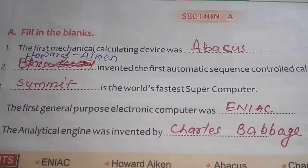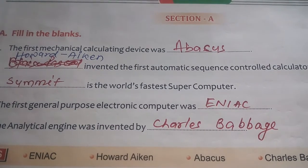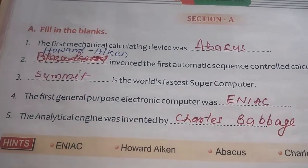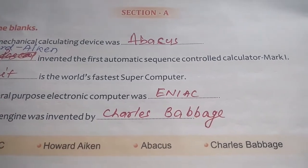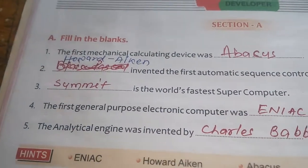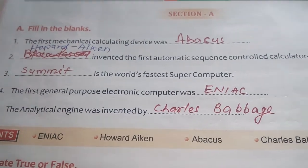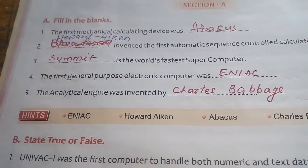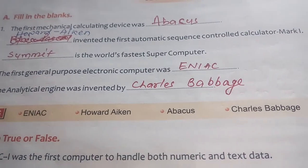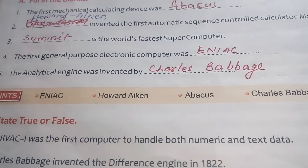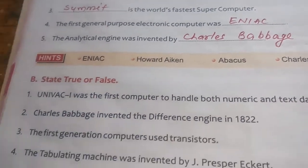The first mechanical calculating device was the abacus. The second, dash invented the first automatic sequence control calculator, MARK-1, is Howard Aiken. And SUMMIT is the world's fastest supercomputer. The first general-purpose electronic computer was ENIAC. And the analytical engine was invented by Charles Babbage.